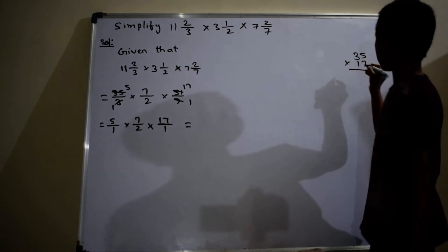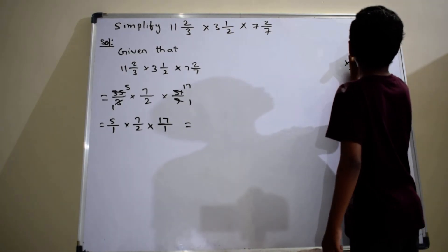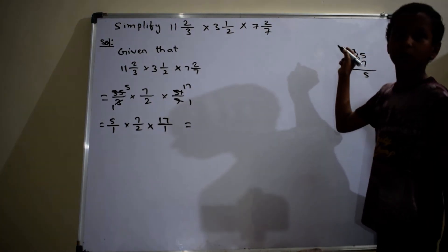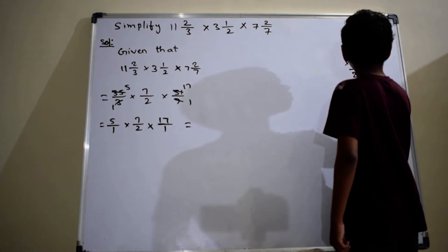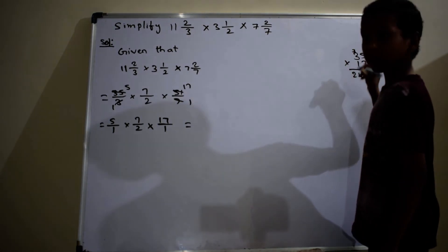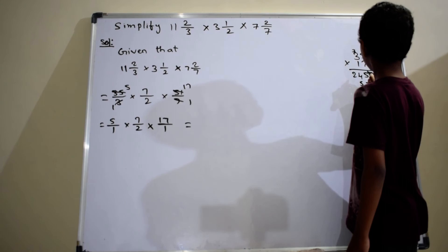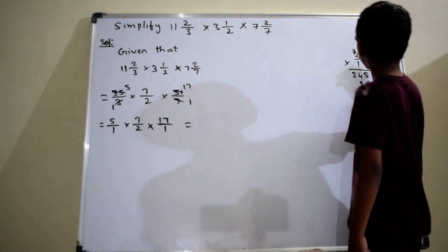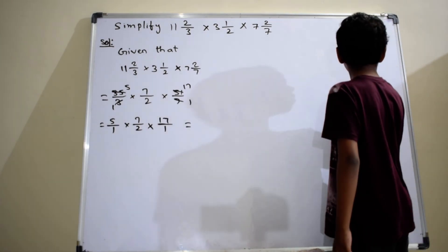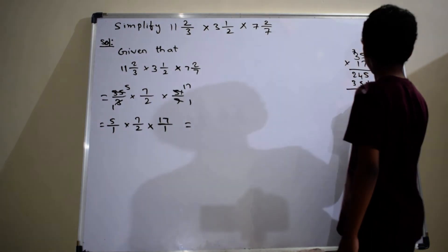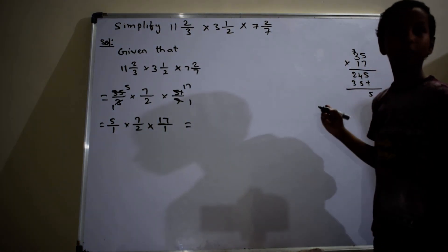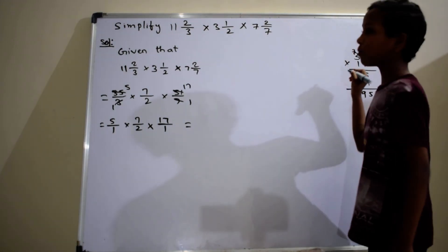35 times 17: 7 times 5 is 35, 5, 3, 7 times 3 is 21, 21 plus 6, 24 plus 5. 1 times 5 is 5, 1 times 3 is 3, 5. 4 plus 5 is 9, 2 plus 3, 5.